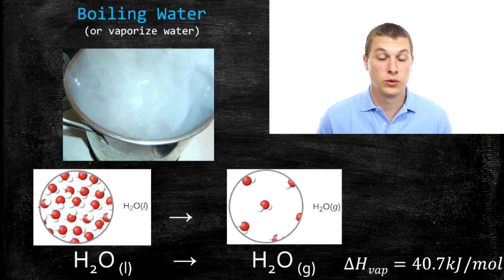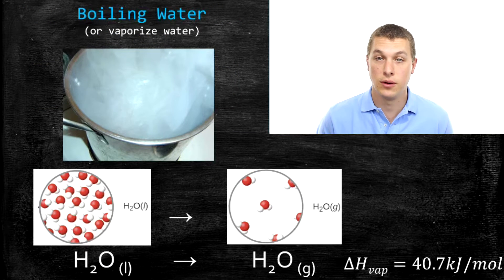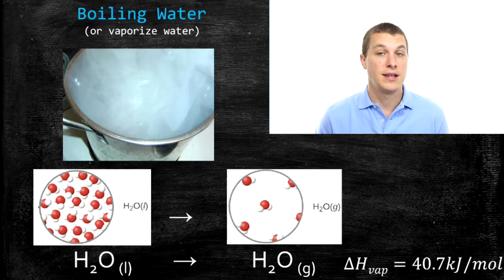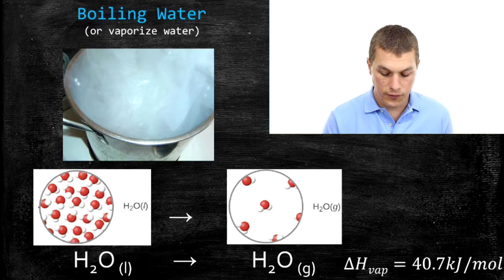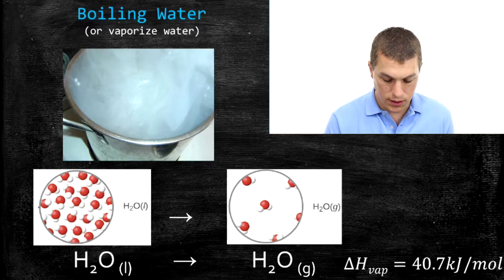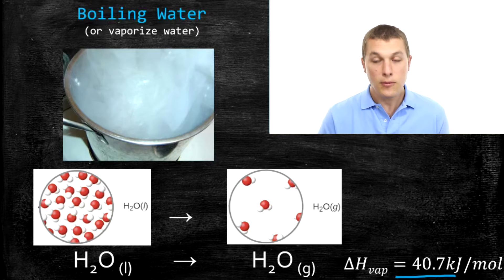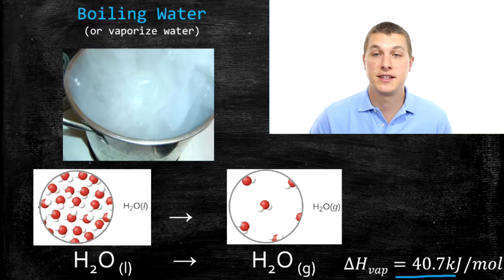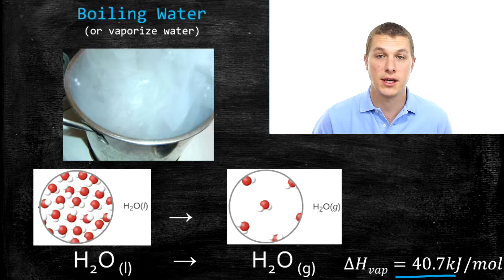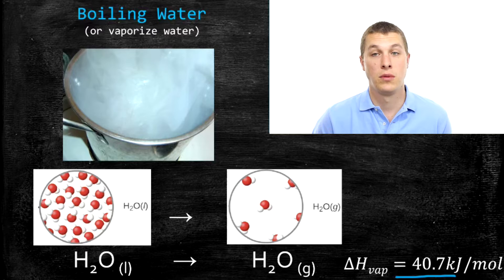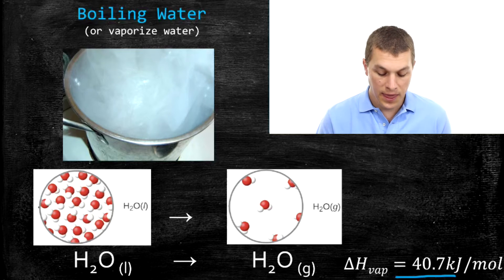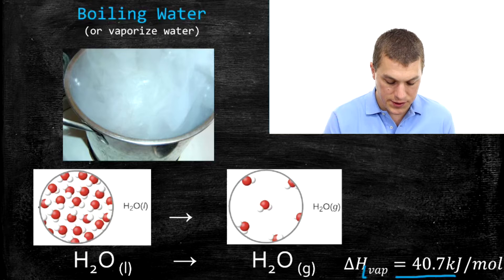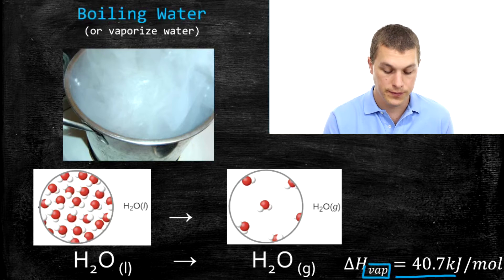Boiling water is an example of taking water molecules farther apart. You put water on your stove, apply heat, and eventually you spread out the water molecules. That takes energy — it's an endothermic process. Because it's endothermic, if we look at the enthalpy associated with it, we'll see that it's positive. It takes 40.7 kilojoules of heat to spread apart one mole of water molecules from liquid to gas. We call this the enthalpy of vaporization.